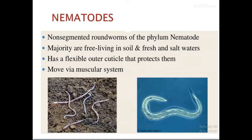Nematodes are usually considered to be roundworms — non-segmented roundworms of the phylum Nematoda. A majority of them are found free-living in the soil as well as in fresh and salt waters. They have a flexible outer cuticle which protects them, and they move via a muscular system. Even when we plow the land or sand, many of these roundworms can be found within the soil.